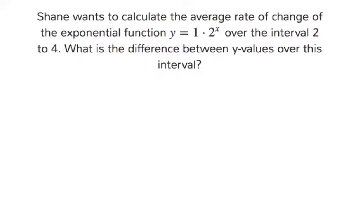It says here Shane wants to calculate the average rate of change of the exponential function, y equals 1 times 2 to the power of x, over the interval 2 to 4. What is the difference between y values over this interval?